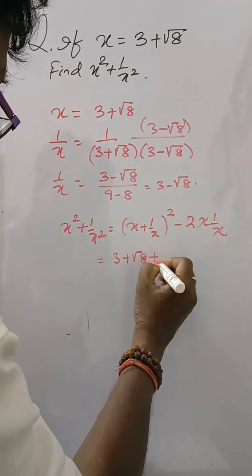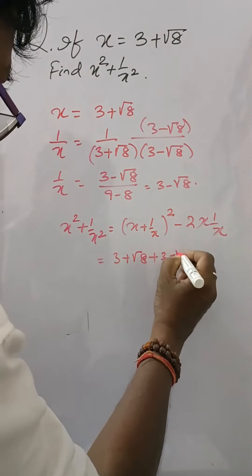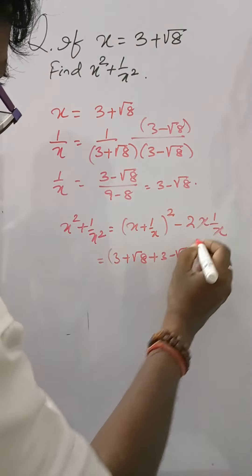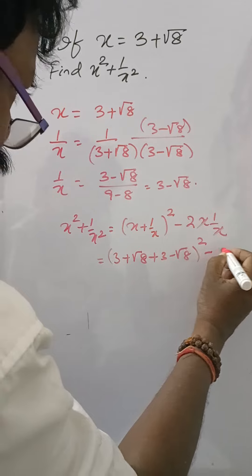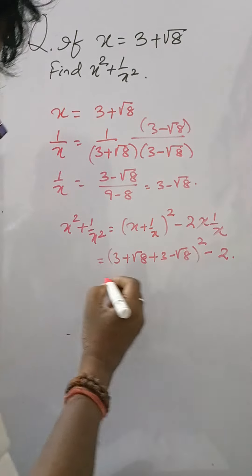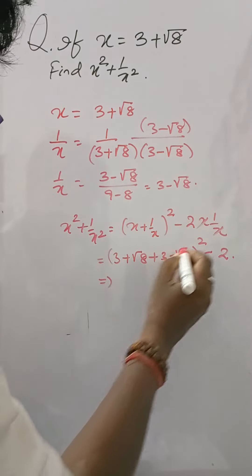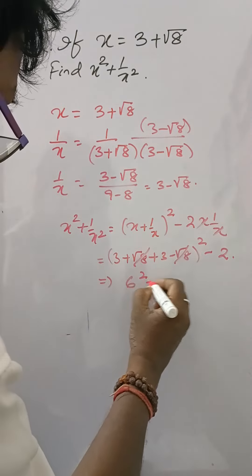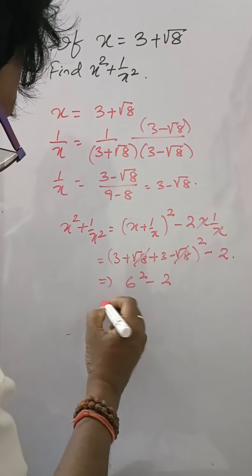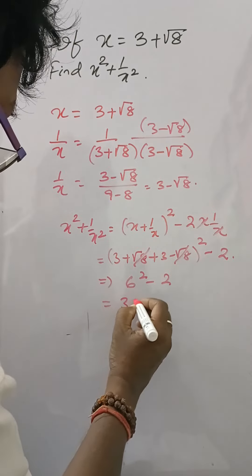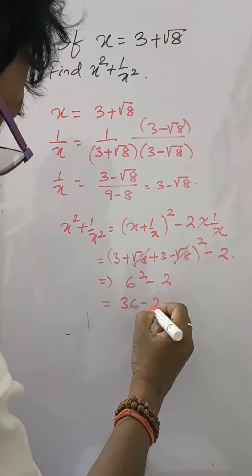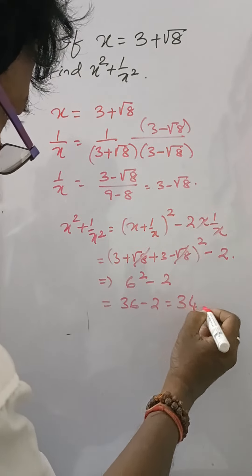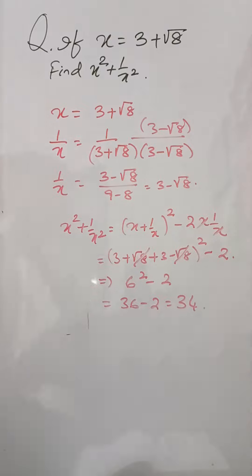The under root 8 terms cancel, leaving 6 square minus 2, which is 36 minus 2. That is 34 — the answer.